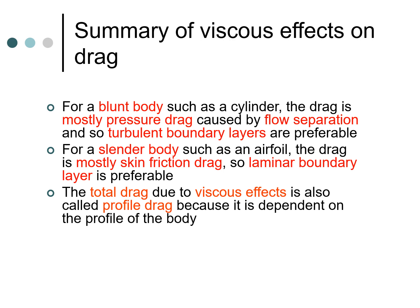The first thing was that when we are having a blunt body, essentially something like a cylinder, the drag is mostly pressure drag caused by flow separation. So turbulent boundary layers are preferable in these cases. Also, if we have a slender body such as an airfoil, the drag is mostly skin friction drag, so laminar boundary layer is preferable. The total drag due to viscous effects is also known as profile drag, and this is dependent on the profile of the body.